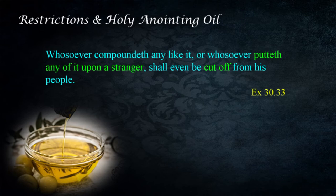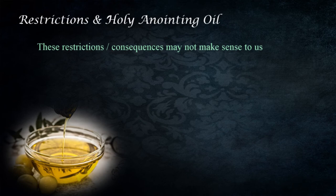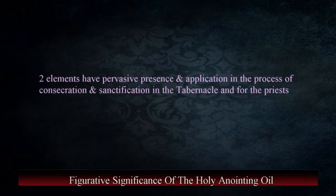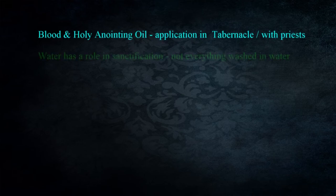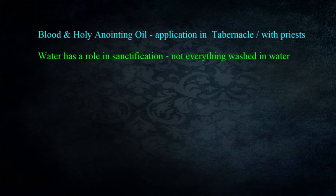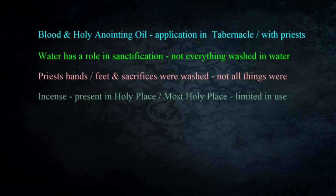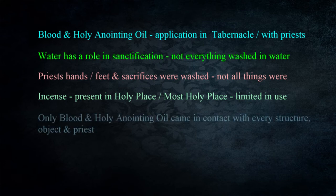Some of these restrictions might not make sense until we examine them closely. The power of the holy anointing oil lies in the connections it has with the unfolding of God's plan to save all mankind through the coming of the Messiah. There are at least two elements with a pervasive presence in the process of consecration and sanctification in the tabernacle and for the priests — blood and the holy anointing oil. Only blood and the holy anointing oil came into contact with every single structure, object, and priest, and that point directs us toward the Messiah.